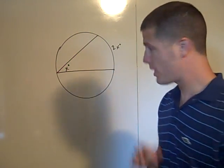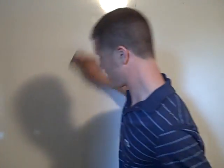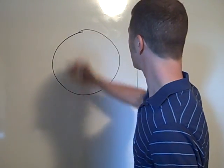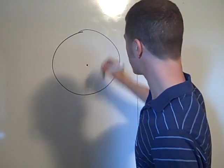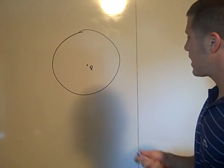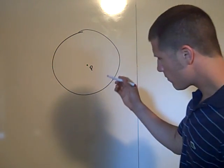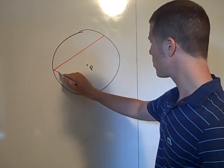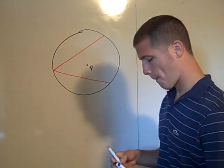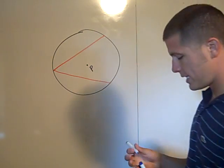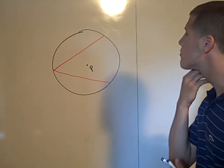There are three cases to consider. The first case — and maybe the hardest — is when the center of the circle, which we'll call P, is in the interior of the inscribed angle. Here we have our inscribed angle in red, and the center point P is in the interior of the angle.